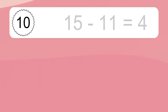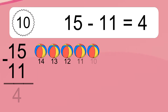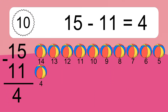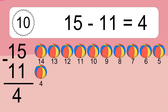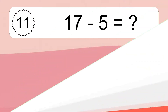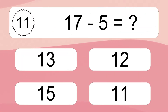13 minus 9 equals 4. Let's count it: 12, 11, 10, 9, 8, 7, 6, 5, 4. 15 minus 11 equals what?